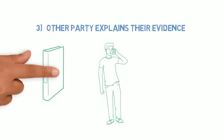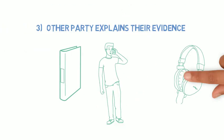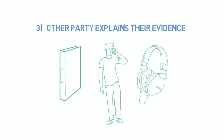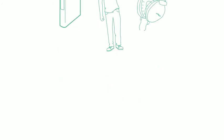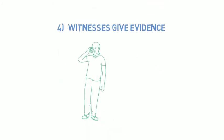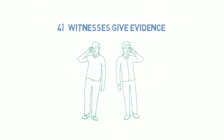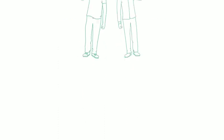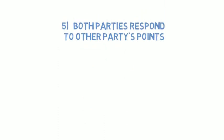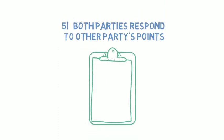Step 3: The arbitrator will ask the other party to explain their evidence. Step 4: If needed, witnesses will explain what they know. Step 5: Both parties will have the chance to respond to what the other party has said.